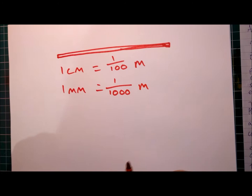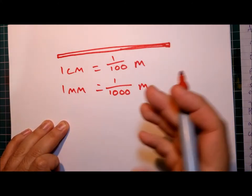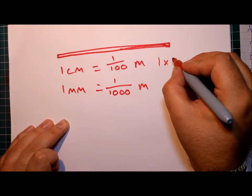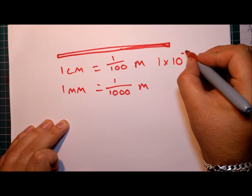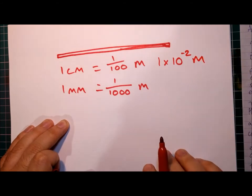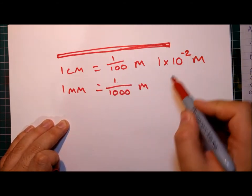Now there's another way of representing these two numbers. Instead of as a fraction like this, you can say that a centimeter is about one times ten to the power of minus two meters. So that's just another way of showing the same number. You've got two zeros here, so it's minus two.